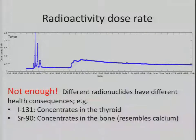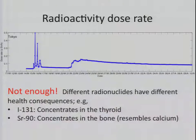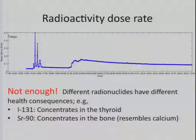This is a radiation dose rate measured in micro sievert per hour, but this is obviously not enough because there are different radionuclides that have different health concerns. This measured radiation dose is a mixture of everything. For example, iodine-131, which was the source of major concern in the beginning, concentrates in the thyroid and that's the cause of thyroid cancer, and strontium-90 concentrates in the bone because it resembles calcium, causing another type of cancer.